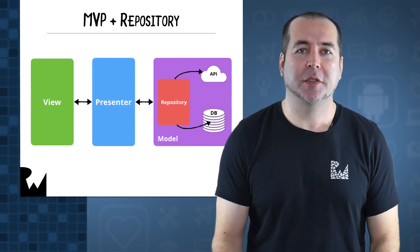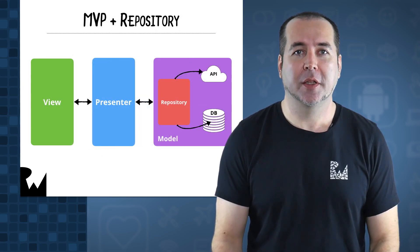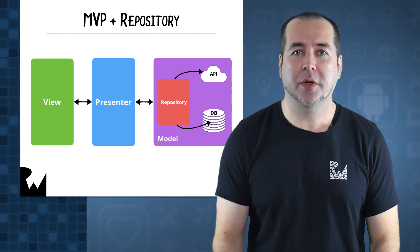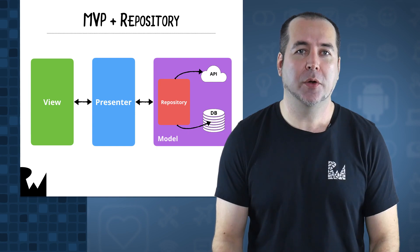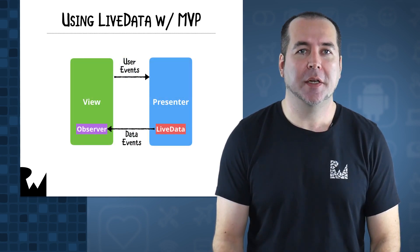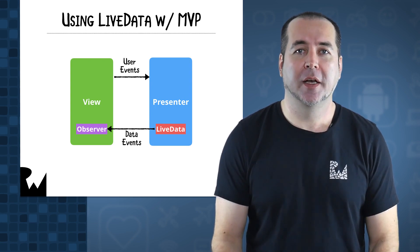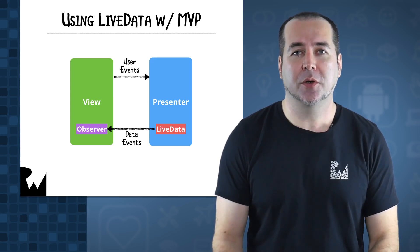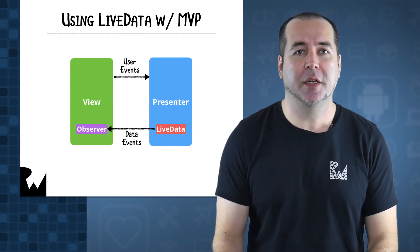MVP can be easily augmented with additional patterns like the repository pattern. A repository helps to manage data updates in local databases or remote data stores. We'll use a repository in the course to store our data locally in a Room database. You also have the option of using the LiveData class from the Android Architecture Components library from Google. LiveData is often used with other architecture components like Room and ViewModel, but you'll see in this course that you can also use LiveData with a presenter.